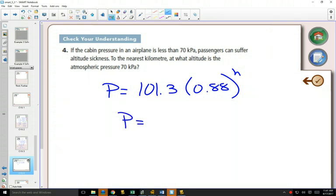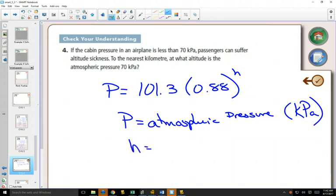And they would tell you what each thing stands for. So P is our atmospheric pressure measured in kilopascals, and h is our altitude, our height, measured in kilometers.